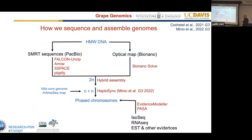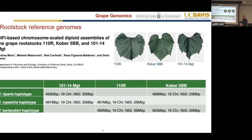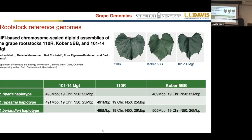One of our first examples is the Cabernet Sauvignon genome, where we were using PacBio sequencing in parallel with optical mapping to build hybrid assemblies that, with our Aploscync tool, we assembled into phased chromosomes. This is now outdated because of the introduction of high-fidelity sequencing. In a paper we released recently, we showed that HiFi-based chromosome-scale diploid assemblies can be generated and phased using parental information, because we looked at genomes of three rootstocks that are hybrids of two species and a third one, allowing us to assign haplotypes to parents.